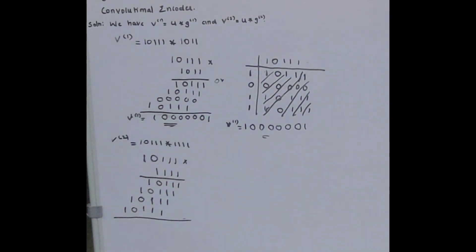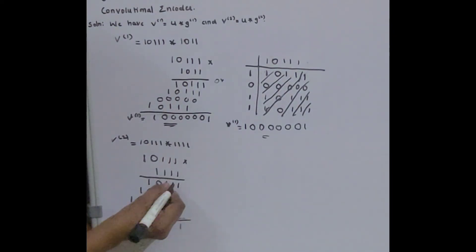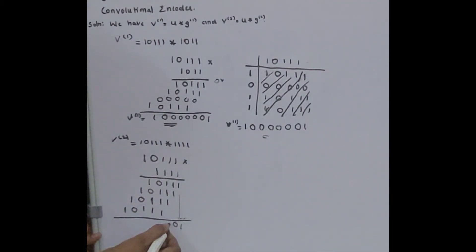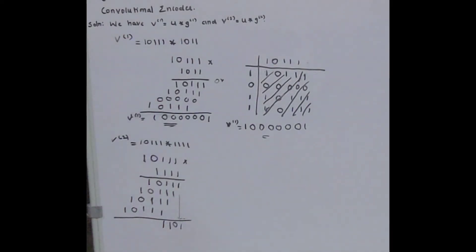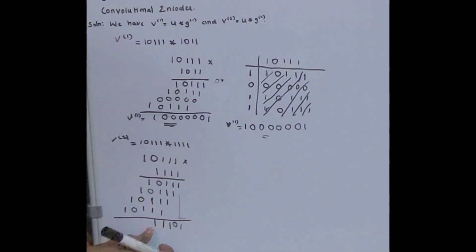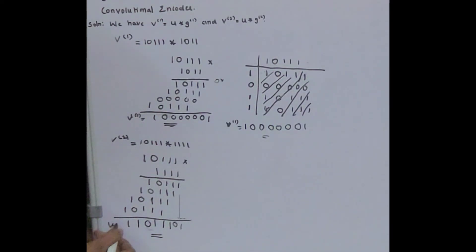Adding all terms using modulo-2 addition: only 1 here, then 1+1=0, then 1+1=0, then 0+1=1, then 1+1=0, then 0+1=1, then 1+1=0, then 0+1=1, then 1+1=0, then 1+0=1, then 1 here. So V2 = 1, 1, 0, 1, 1, 1, 0, 1. This is the V2 output.